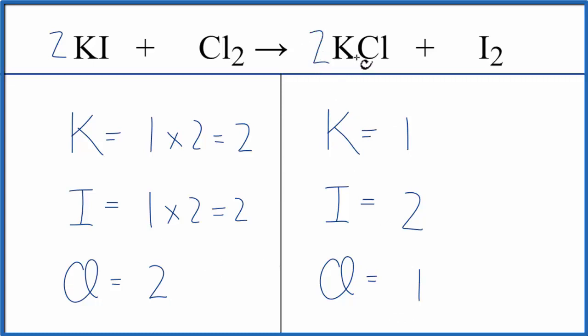Coefficient of two, so one times two, that gives us two potassiums. Chlorines, one times two, gives us two of those.